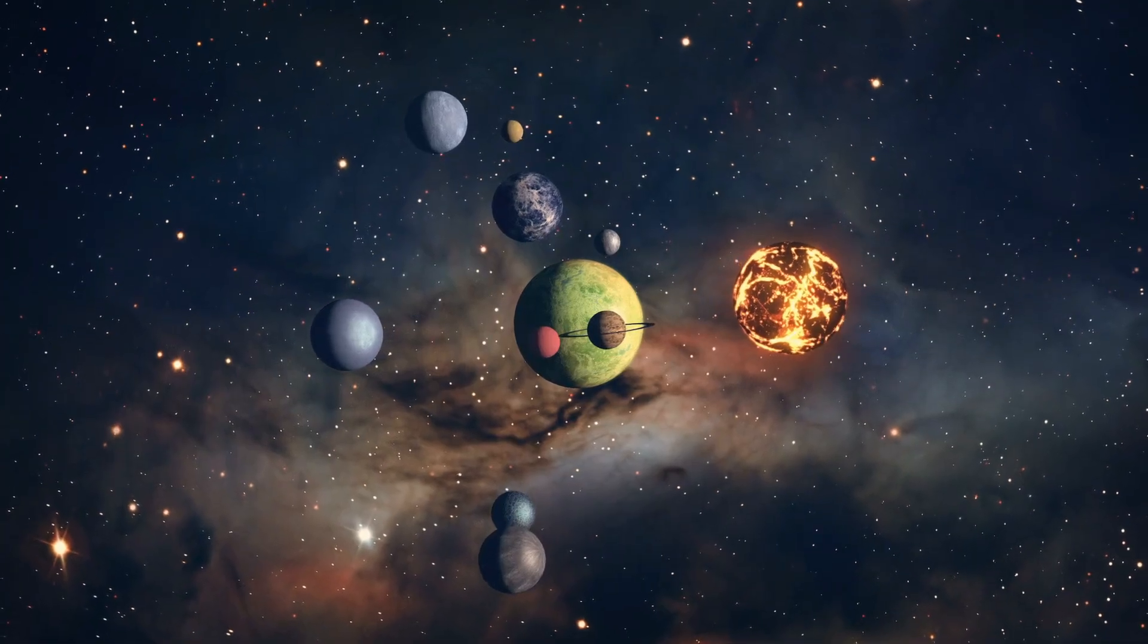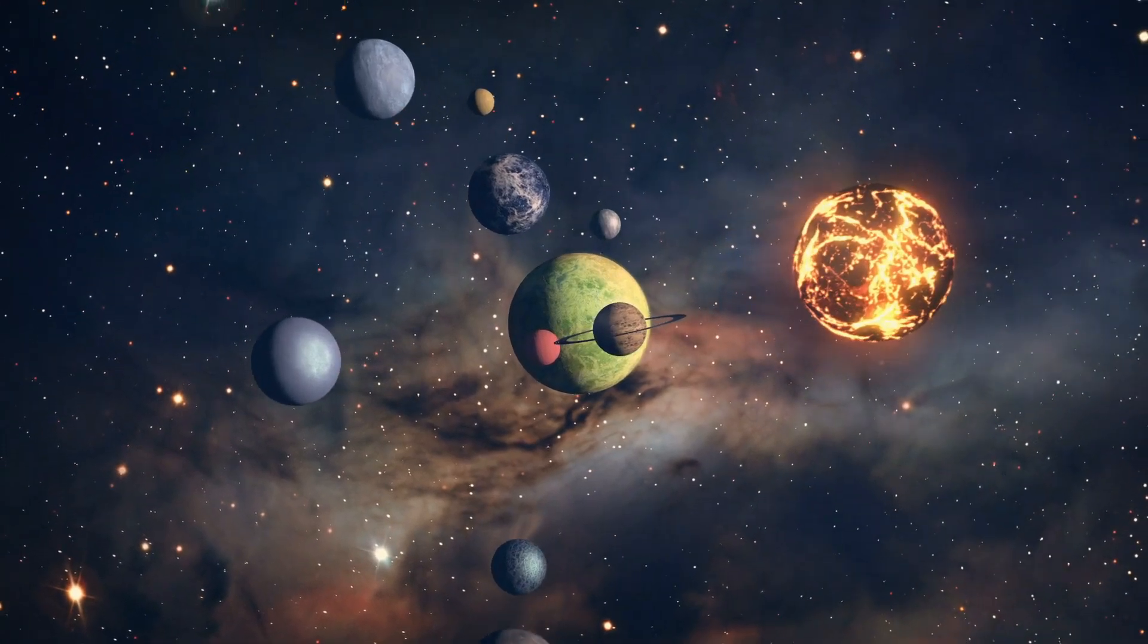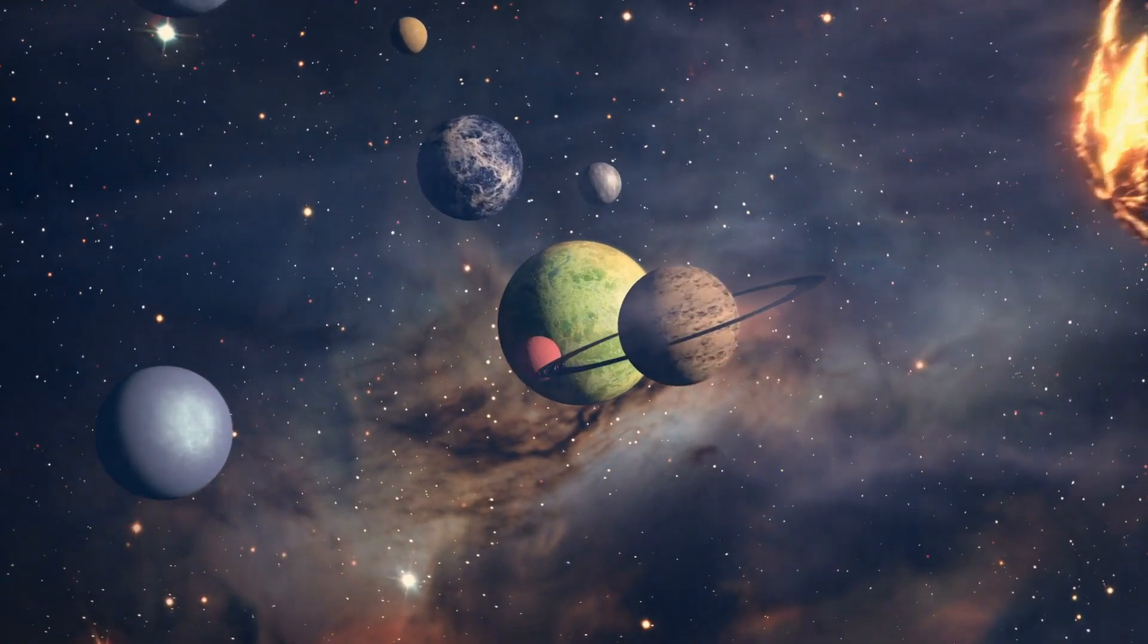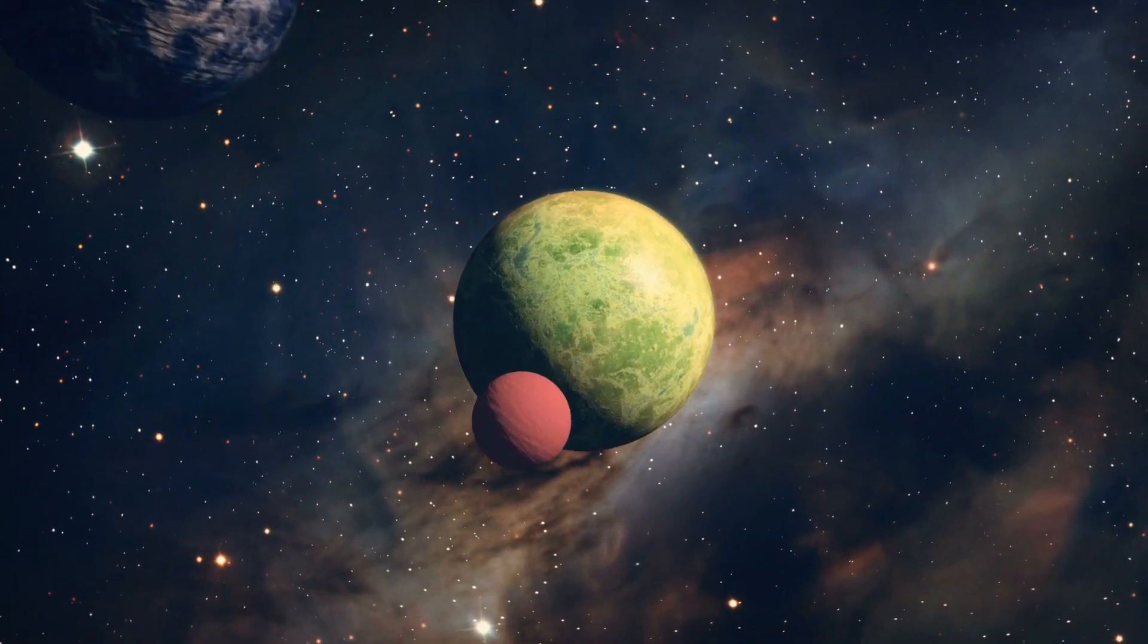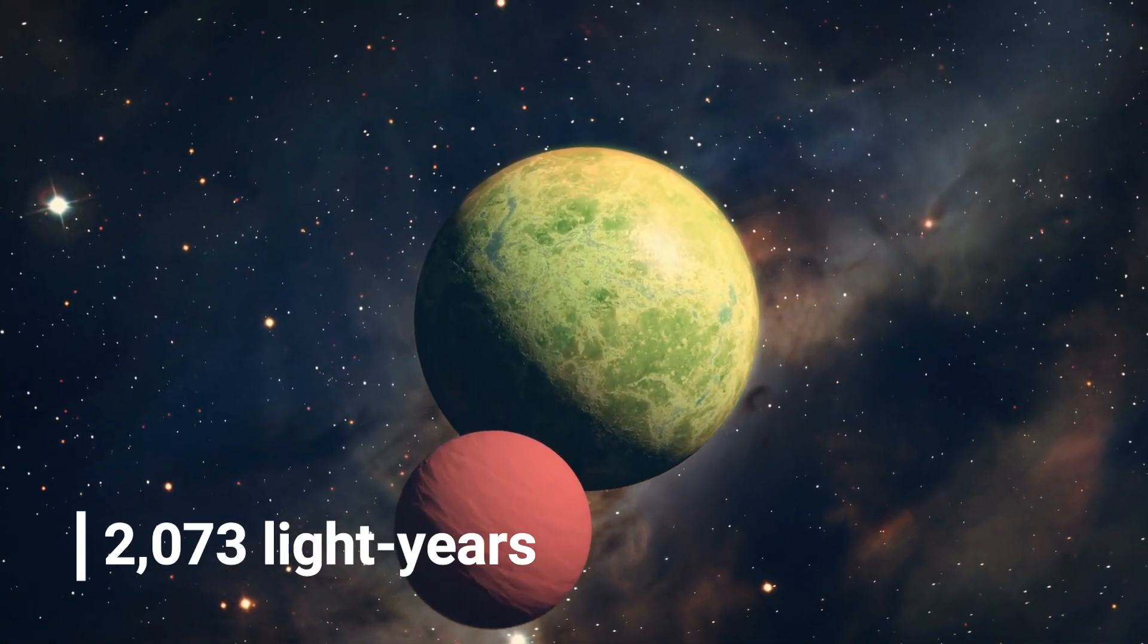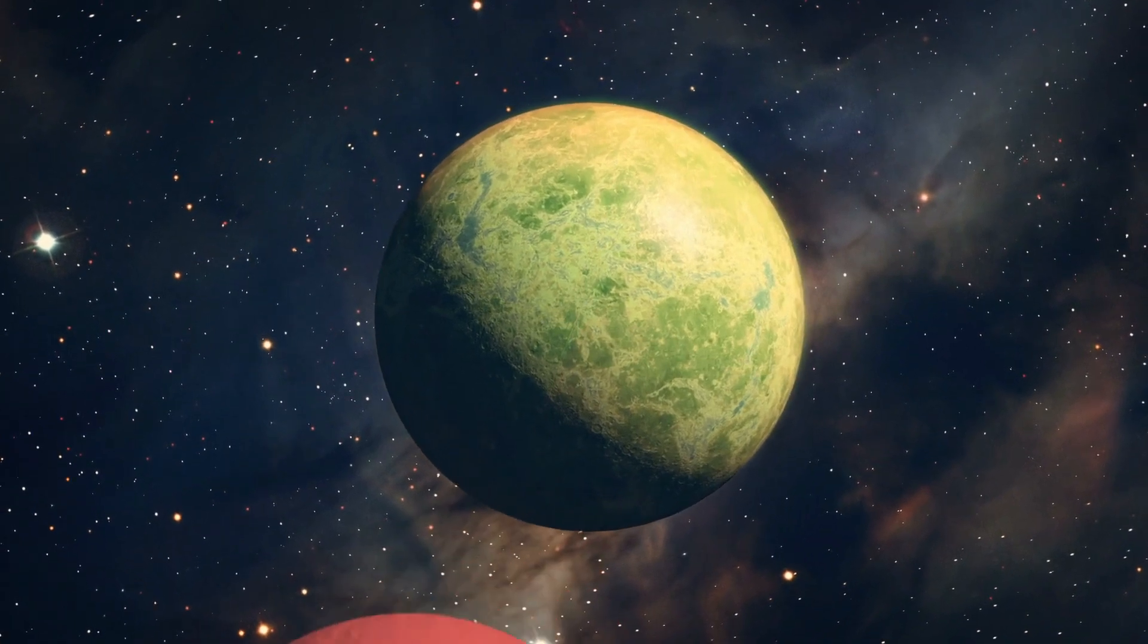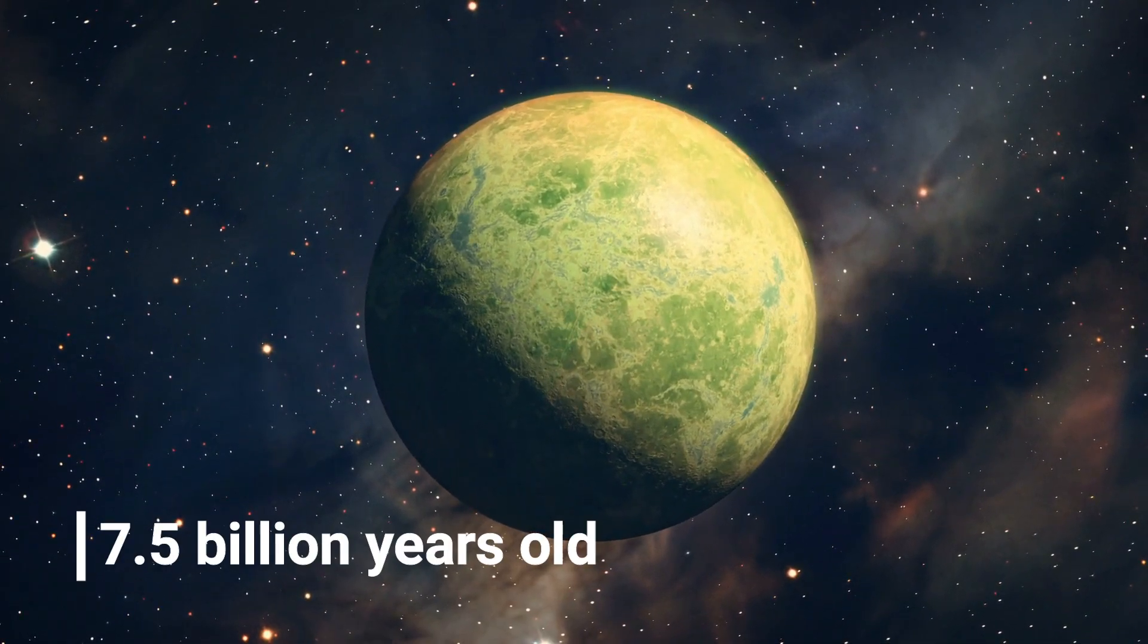Our next super-Earth shares a similar name, Kepler-1126b. Except it would be located ever so slightly closer to home. This planet is about 2,073 light-years away and belongs to a system that is 7.5 billion years old.